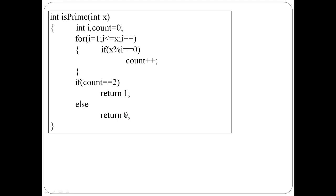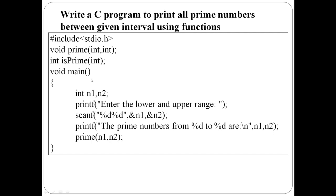This is the is_prime function definition. The function declarations are at the beginning of the program. The prime function takes two integer arguments — lower limit and upper limit — with return type void. Is_prime takes one integer argument and returns one integer value. In the main function, enter the lower and upper limit into n1 and n2. Suppose n1 is 10 and n2 is 20.